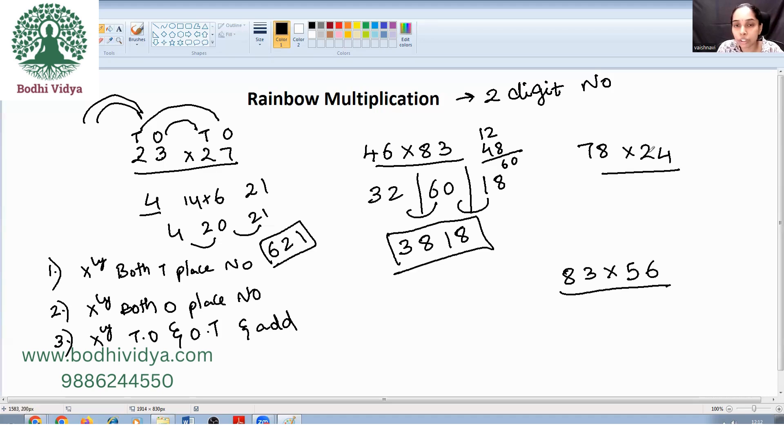Now seven into two tens place. Seven twos are fourteen. Eight fours is how much? Thirty two. Seven into four is how much? Twenty eight plus sixteen. That is what? Forty four. Now dodging. One, eight, seven, two. All right. So easy, no?